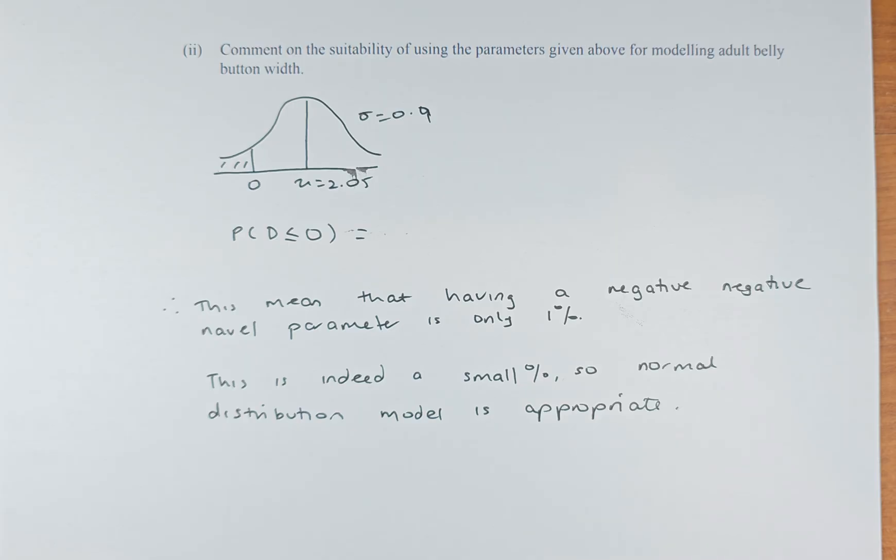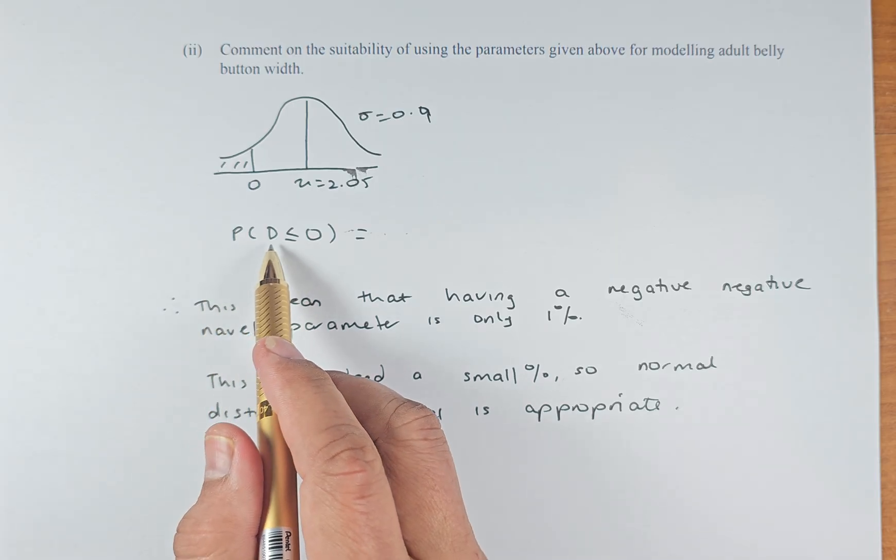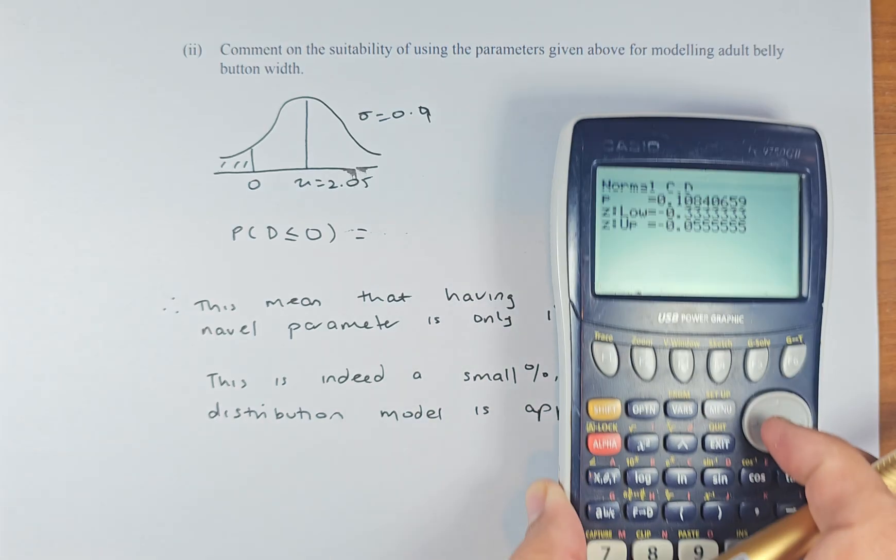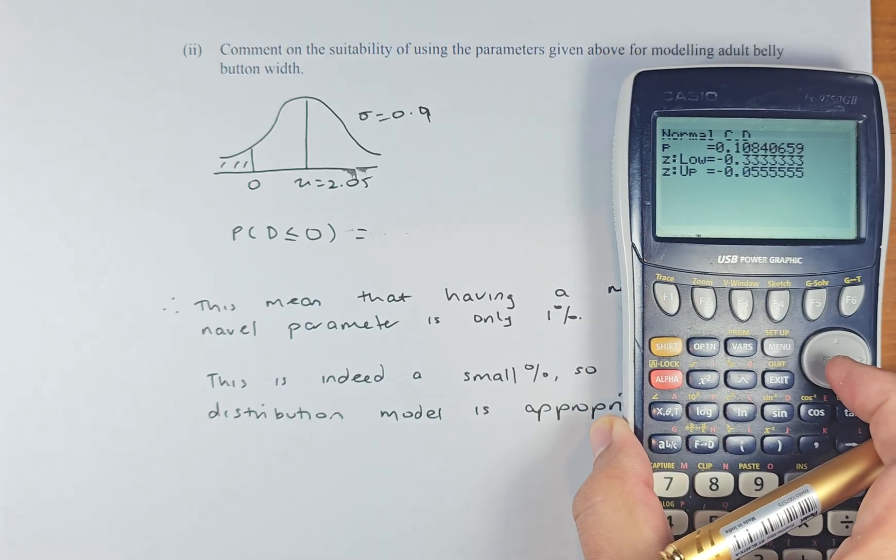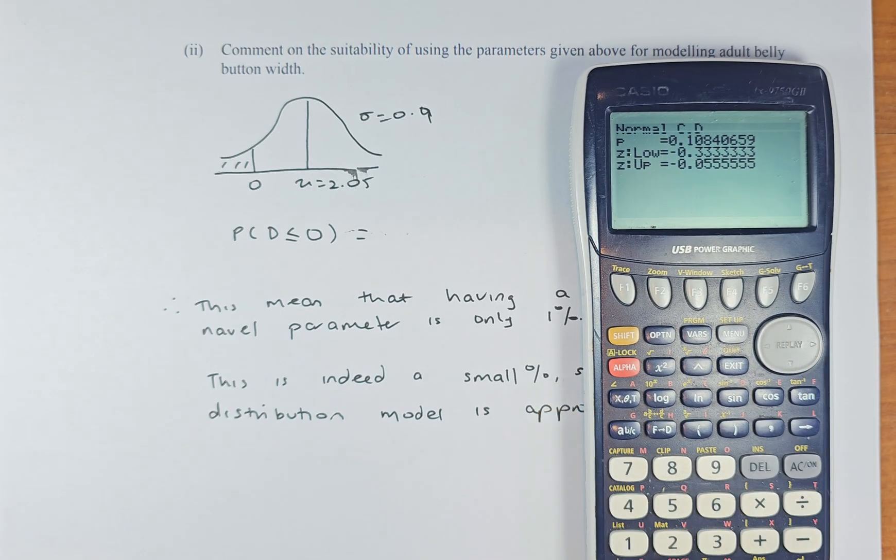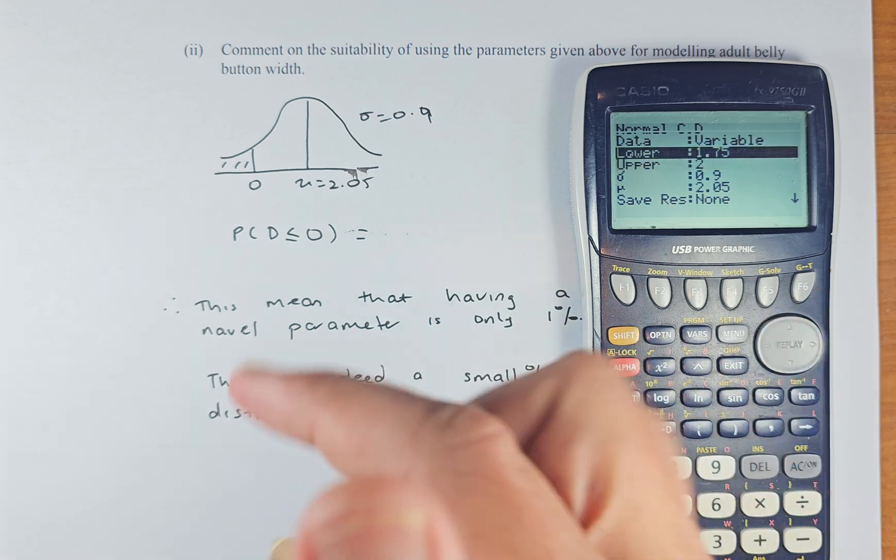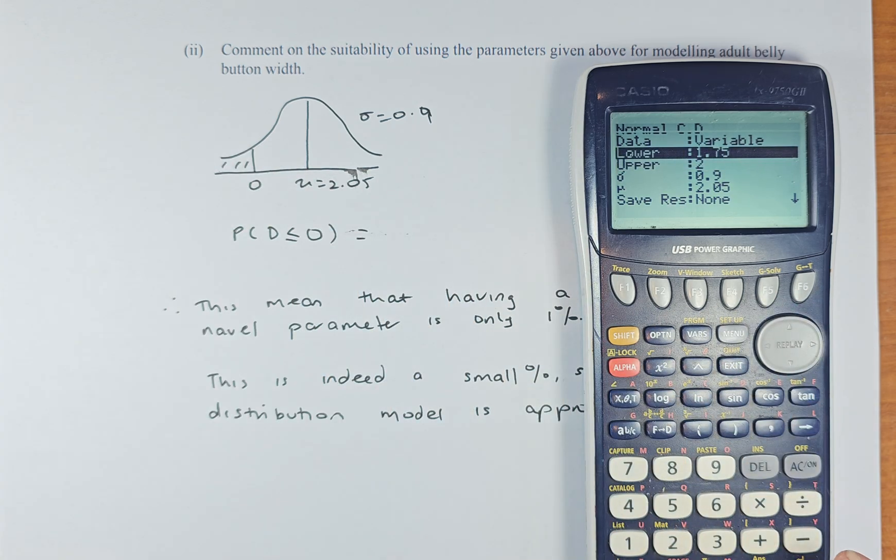So we are first finding the probability that diameter is less than 0 because if it is negative, it's not possible. So we are going to put in a calculator. Same thing. I'm going to put in a calculator here. Exit. So now, the lower is any number here. We put a negative number. For example, minus 10,000. It could be any number you like. The upper is going to be 0.